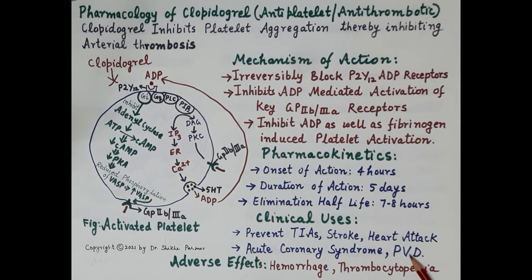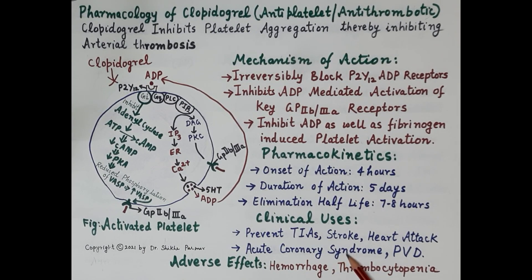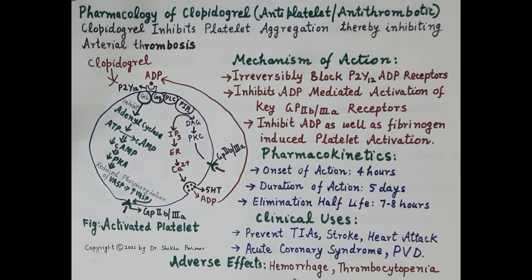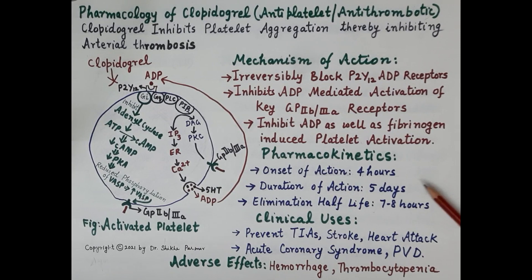Clopidogrel is also used in peripheral vascular diseases such as intermittent claudication, and it reduces incidences of restenosis after percutaneous coronary intervention. The main adverse effects of clopidogrel are hemorrhage and thrombocytopenia.